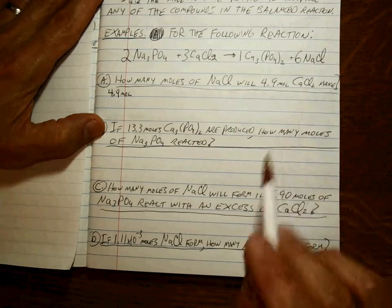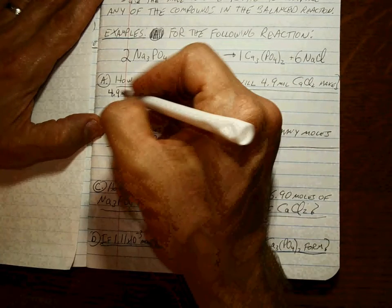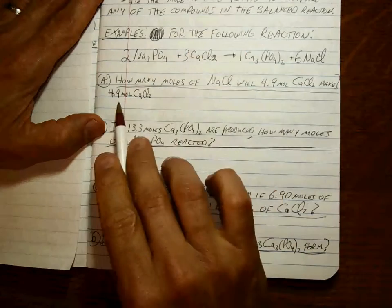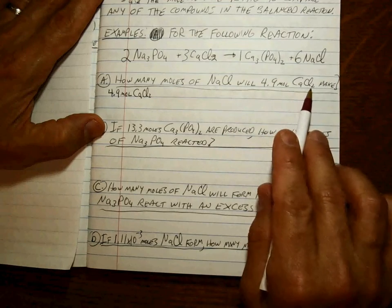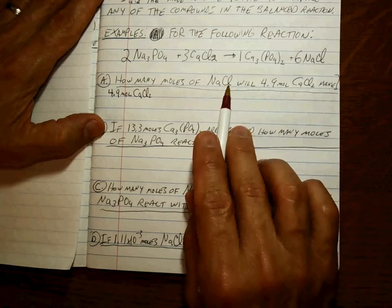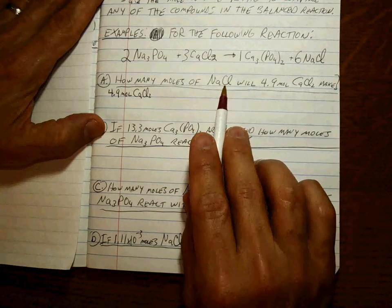So you need to write down the label on it, the molecule that we're talking about. Okay, so we start with this many moles of calcium chloride. They want to know how many moles of sodium chloride.